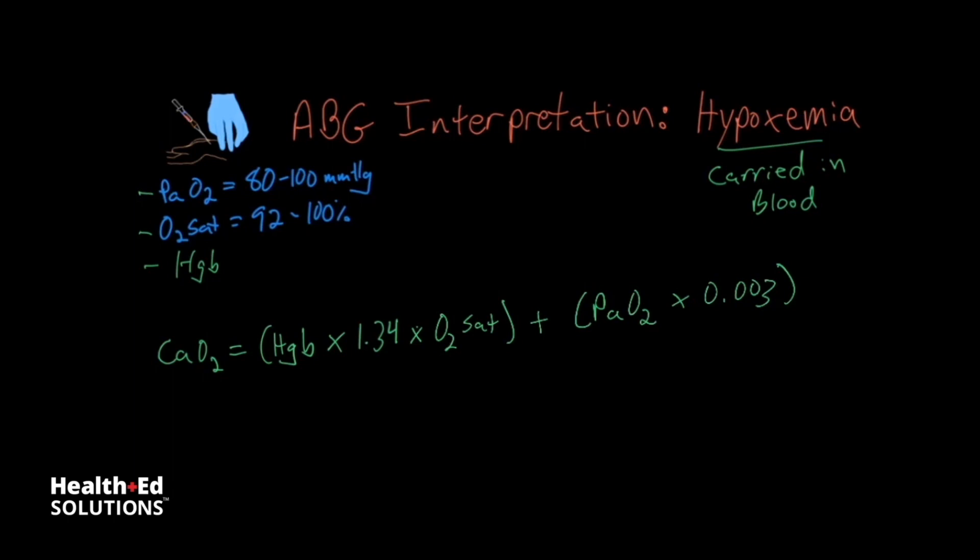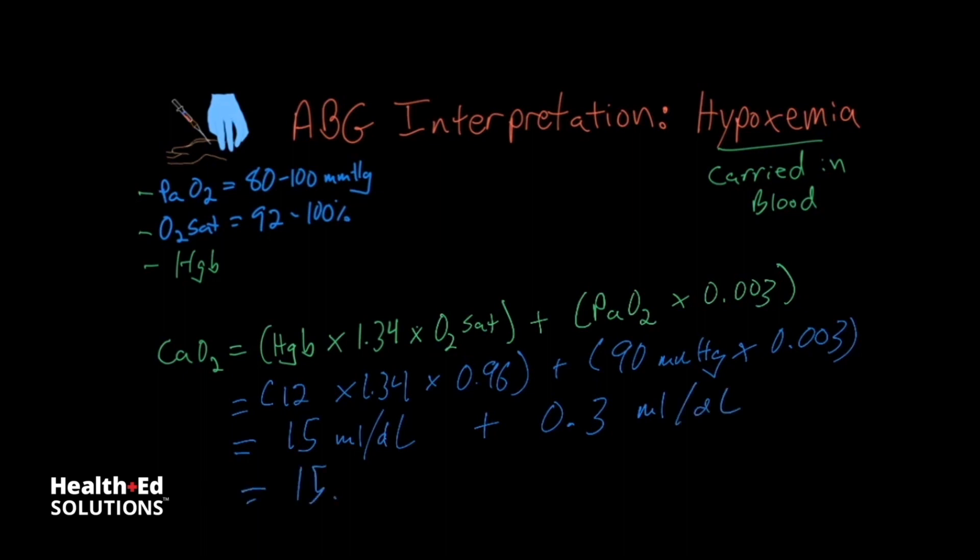So I just want to go through what this would look like with relatively normal values. So say we have a hemoglobin of 12 grams per deciliter, times a constant of 1.34 milliliters of oxygen per gram, times an oxygen saturation of 96 percent, plus a PaO2 of 90 millimeters of mercury, times a constant of 0.003. And what we end up with is a value of 15 milliliters per deciliter, plus, rounding up, about 0.3 milliliters per deciliter, or a total of 15.3.